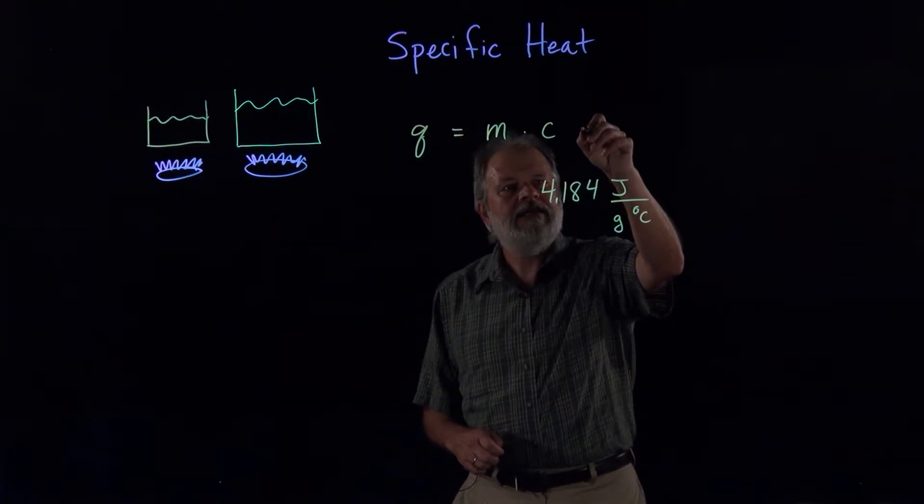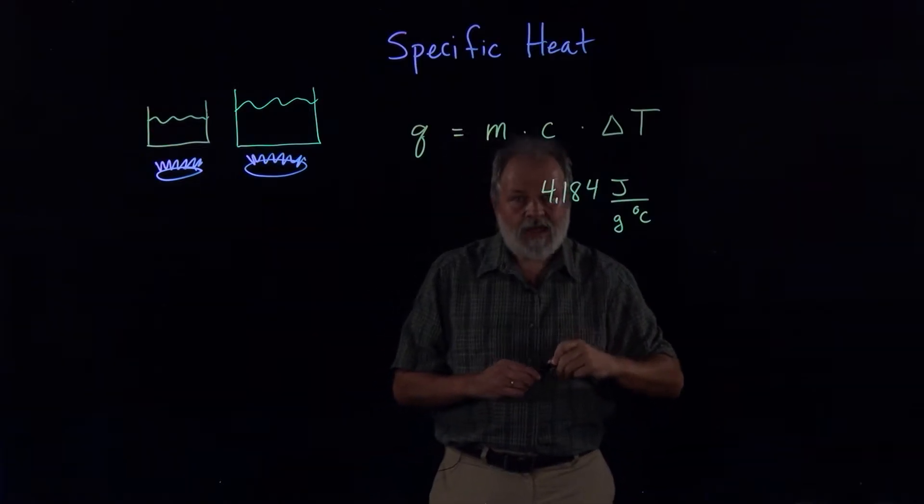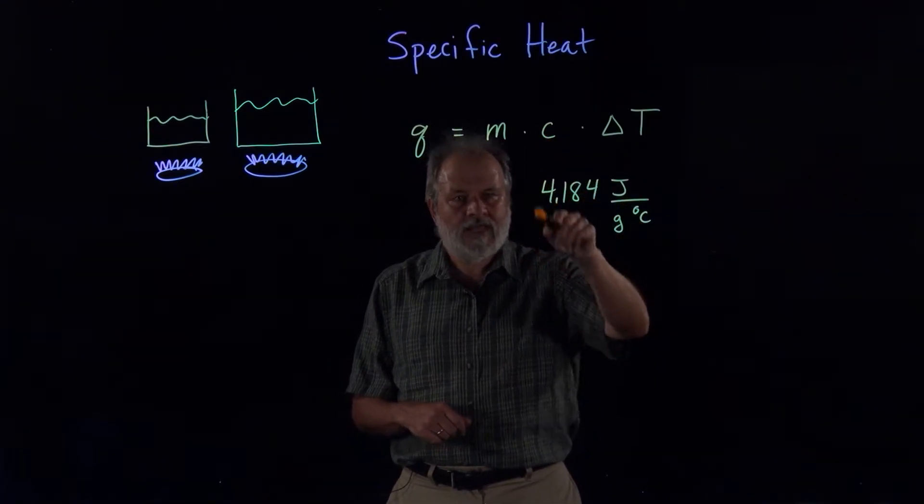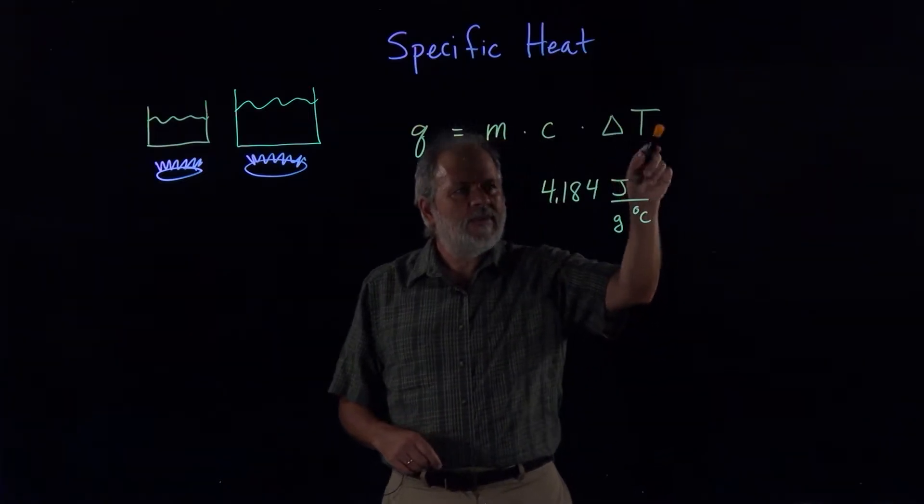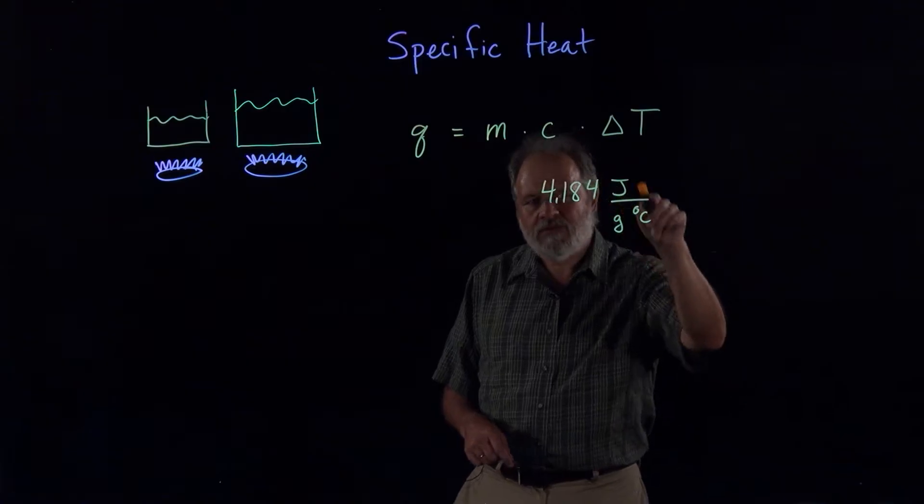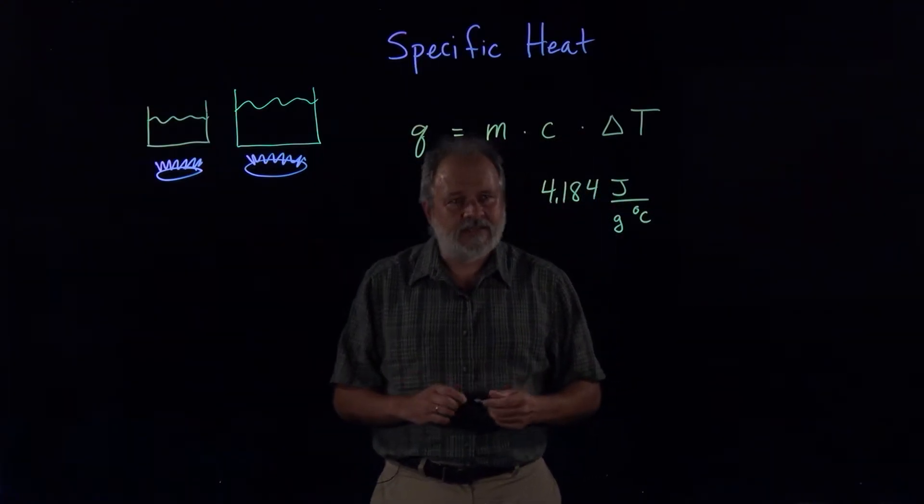And so finally, the final thing is the rise in temperature. So by a units analysis, if I multiply this constant by mass, grams will cancel. If I multiply it by the change in temperature in centigrade, the degree C will cancel, and the answer will be in joules, which is the unit of energy, and of course heat is an energy unit.